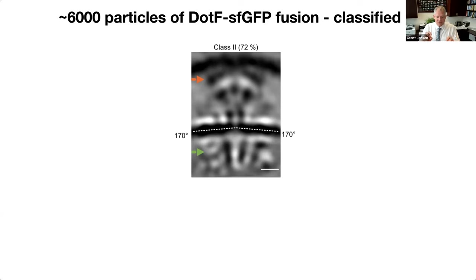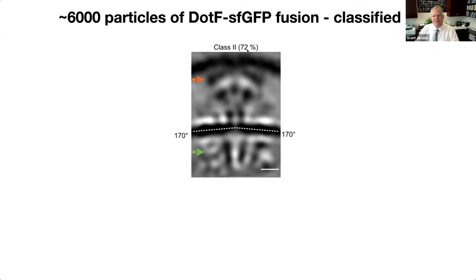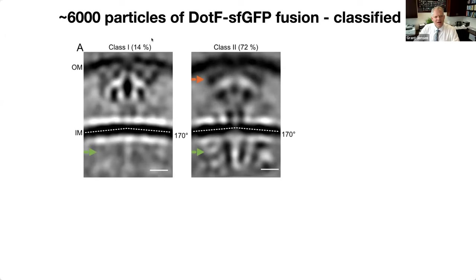Since there's only one or a couple particles at the pole of a cell, we needed hundreds of tomograms. By doing that for days and days on the microscope, we eventually got about 6,000 particles of this fusion complex. The first thing we did was classify them. Having 6,000 particles enabled classification in a way we never could before. The major class - class 2 - 72% of particles had a nicely resolved periplasmic complex. Another class was 14% of the particles.